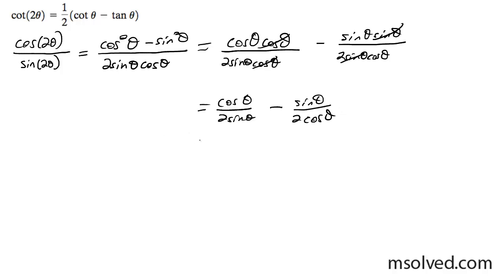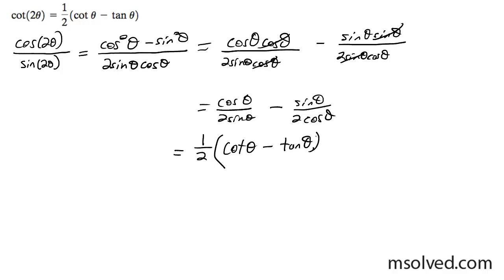What you can do is pull the 2 out of the bottom as a common factor — that gives you one half. This cosine over sine becomes cotangent theta, and the sine over cosine becomes tangent theta. And that's it, we just proved it.